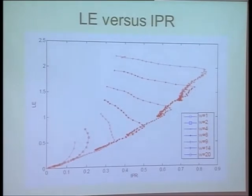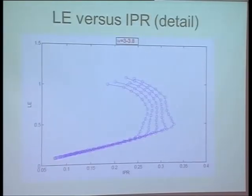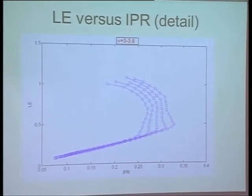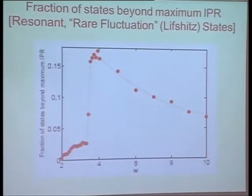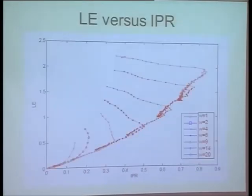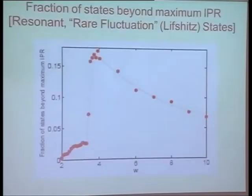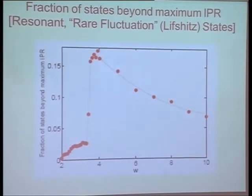One question you might ask is whether I'm talking about exponentially few states here. If you look at the fraction of the states that are on the second branch — this part — that fraction is very negligible for small W, because there is hardly any of that curve. But then around W=4, it takes a huge jump to about 17 percent, and then decays. So these states are not rare at all — they are 17% in 1D, somewhat smaller in 2D, and maybe a few percent in 3D.